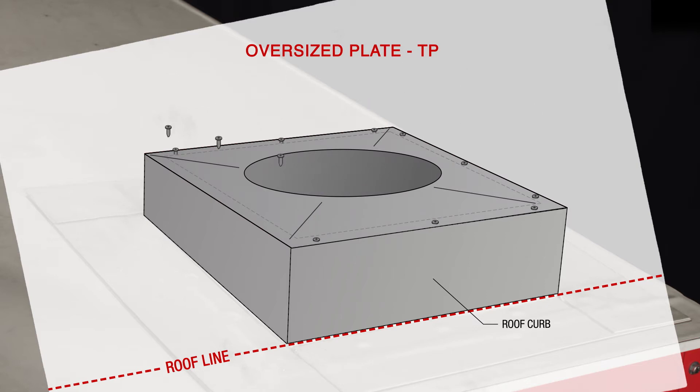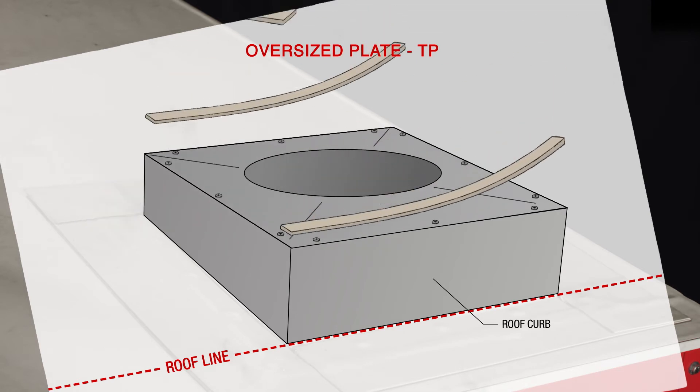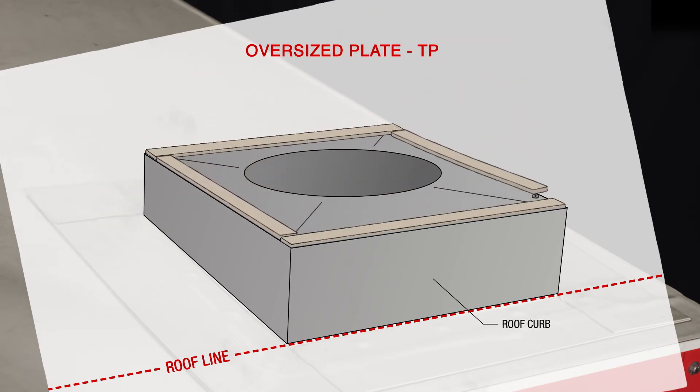You can then secure the plate to the top of the curb using three self-drilling pan head screws per side. Lastly, add the included gasket material to the edges of the plate as shown. It is acceptable for the gasket to sit over the fasteners.